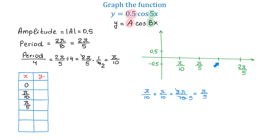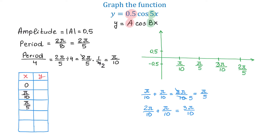To find the next x-coordinate, we take π over 5 and add π over 10. Recall that π over 5 is the same as 2π over 10, so 2π over 10 plus π over 10 makes 3π over 10. The last value in the table will be 2π over 5, since 3π over 10 plus π over 10 equals 4π over 10, which reduces to 2π over 5.